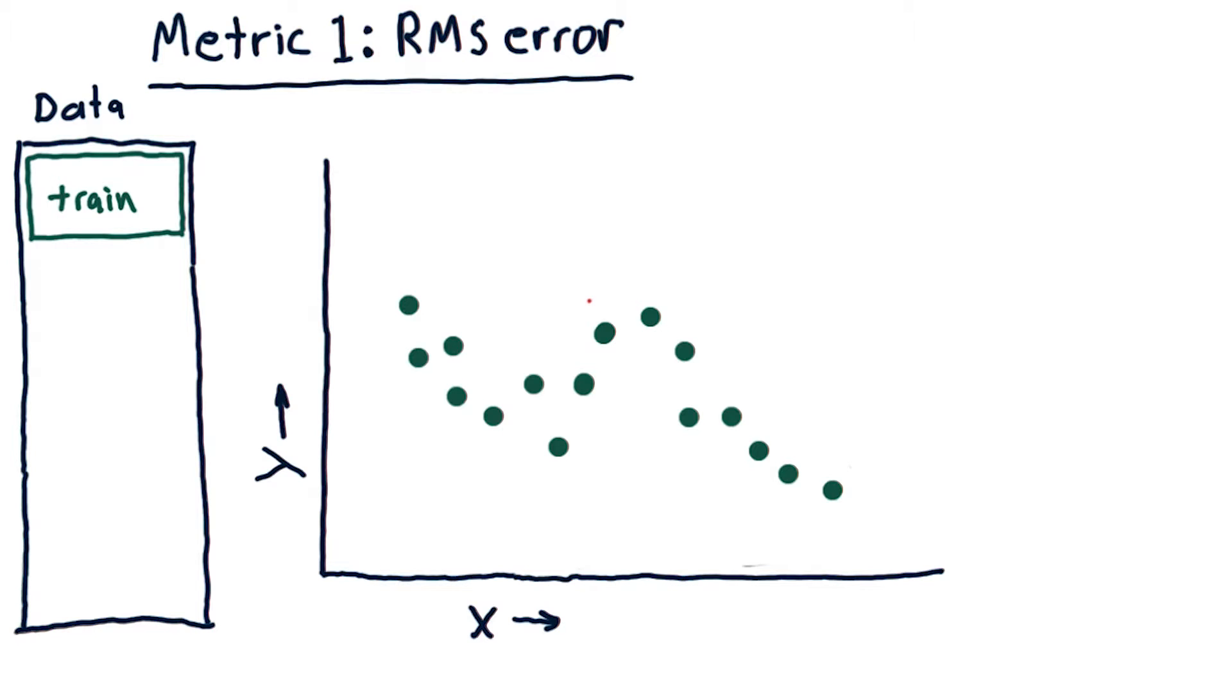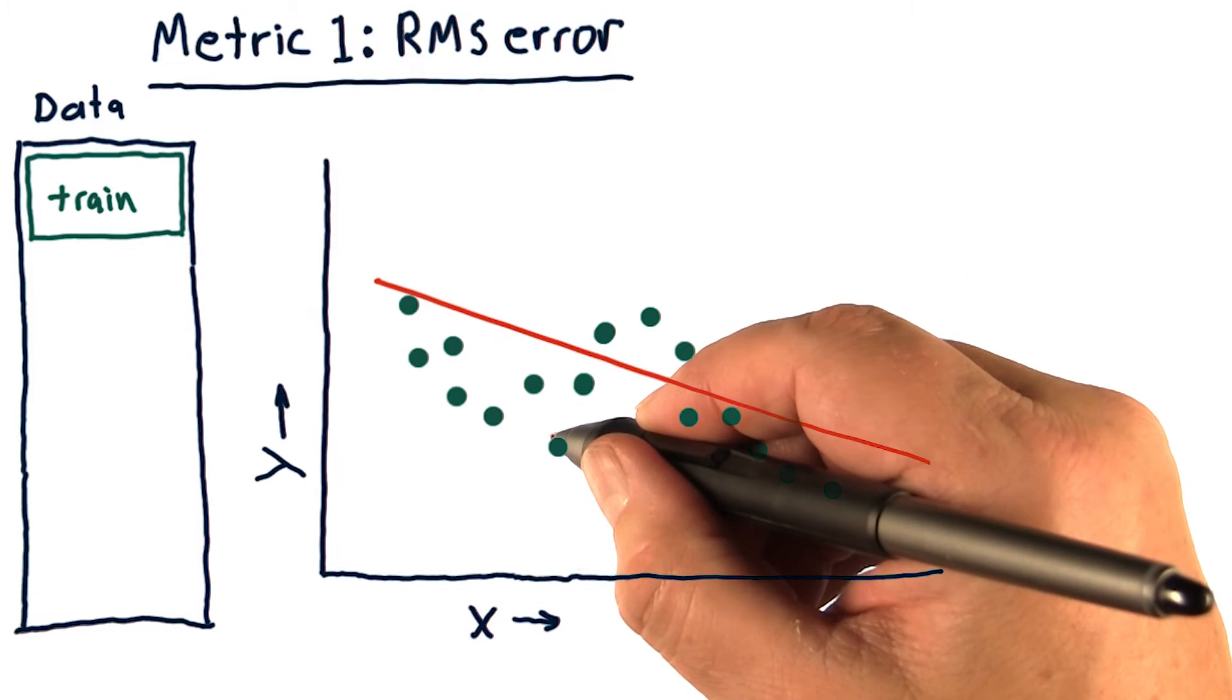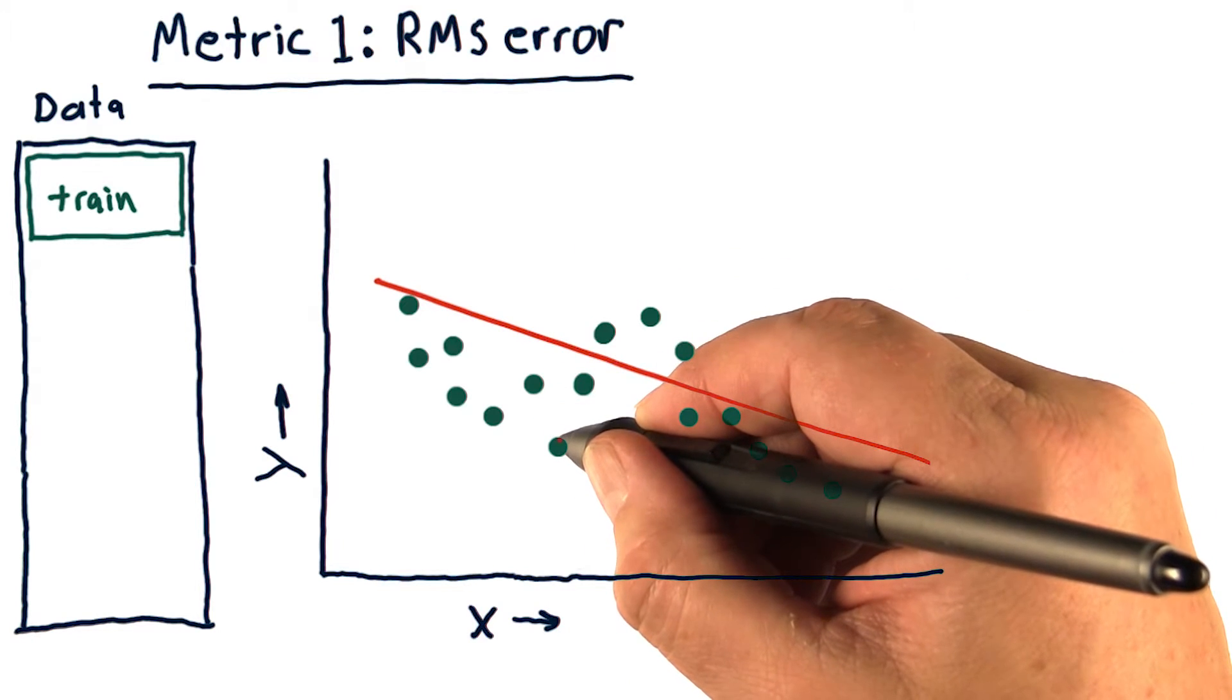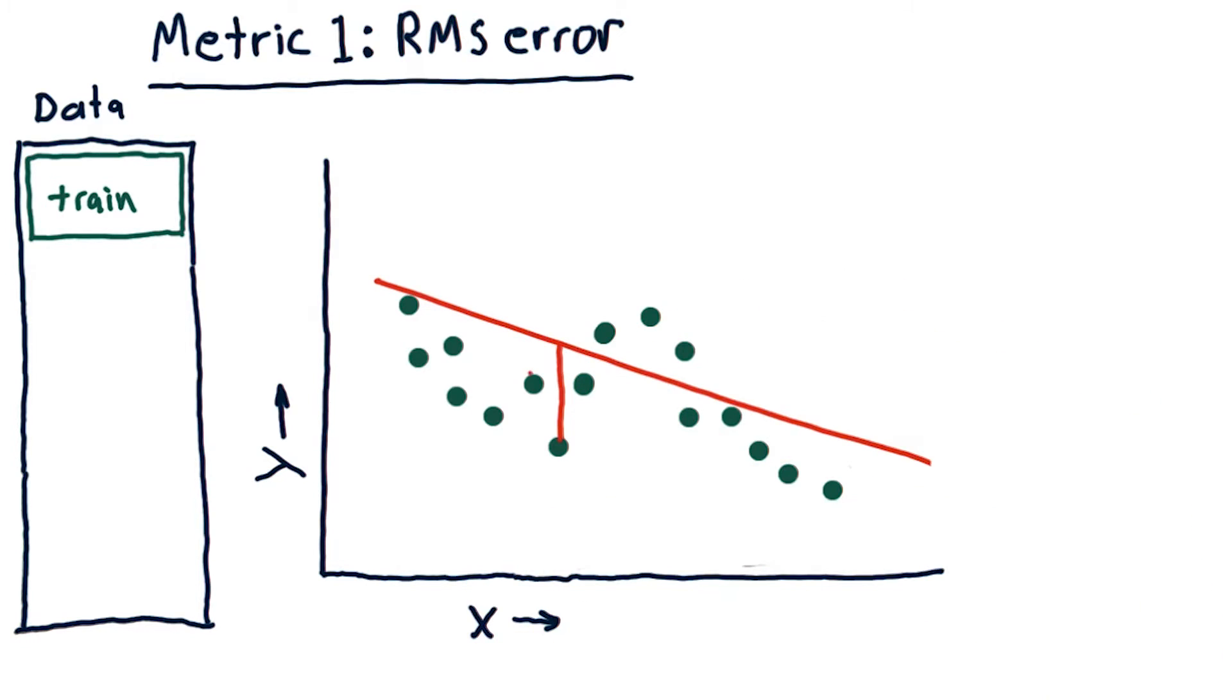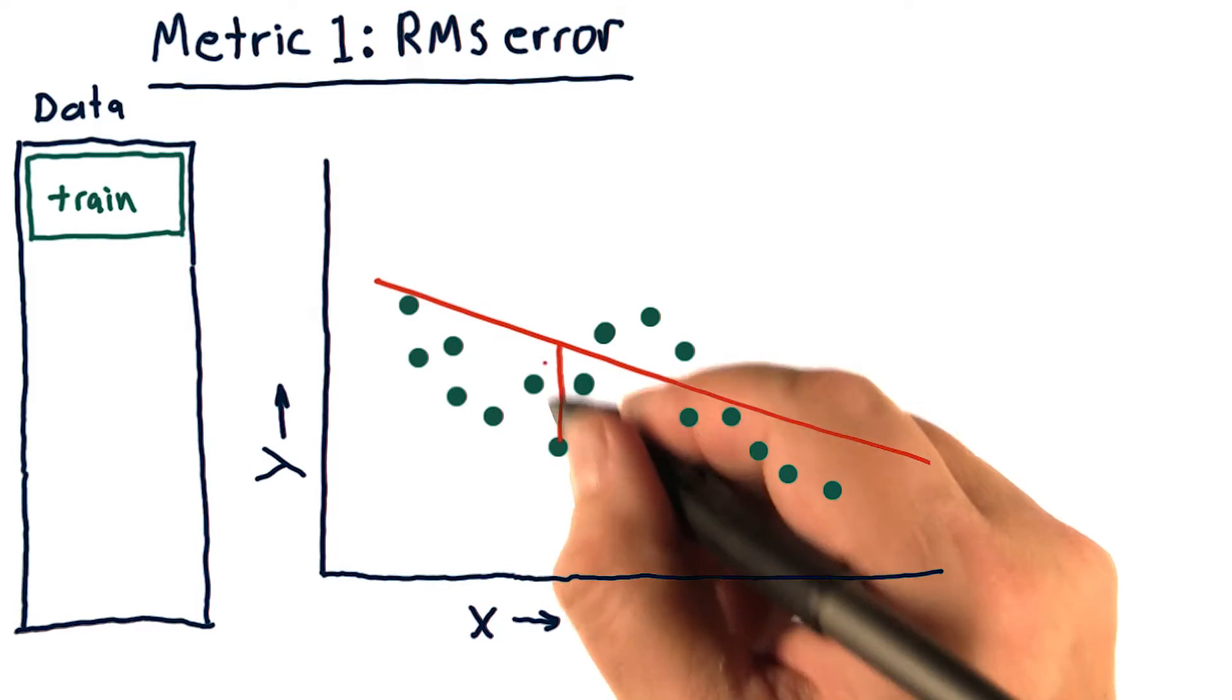Let's say it's a linear model like this. We can assess the model at each real data point, for instance at this data point, and measure the difference between the y value of the data point and the model. And this difference is error.